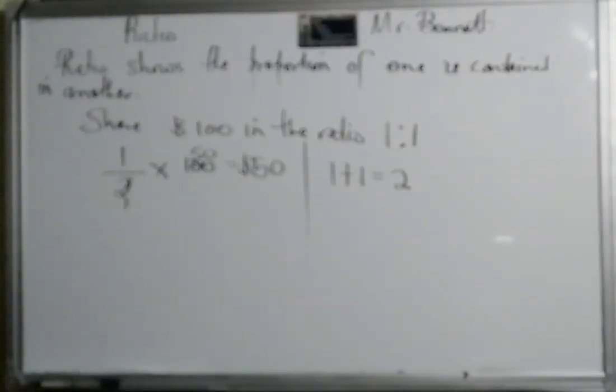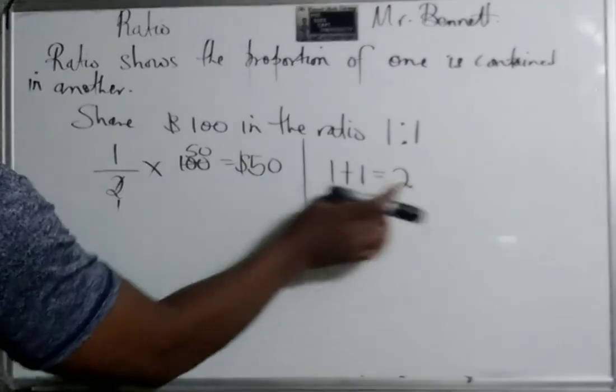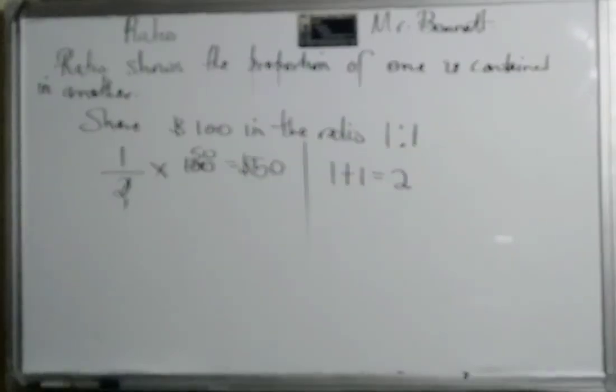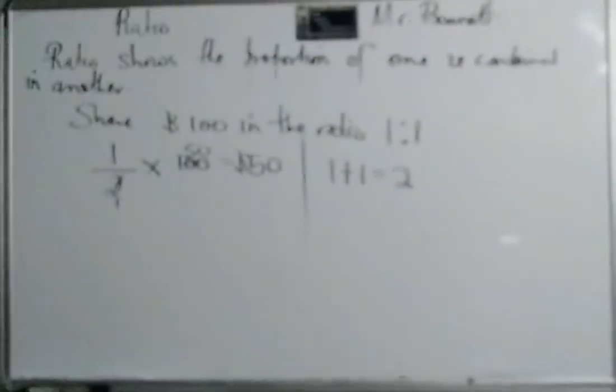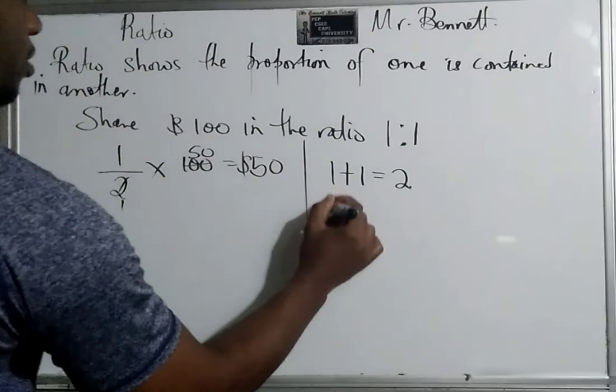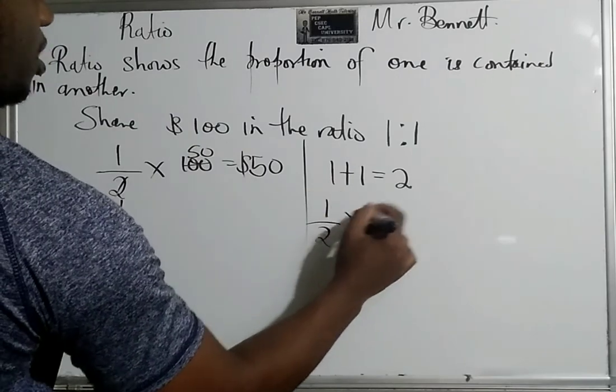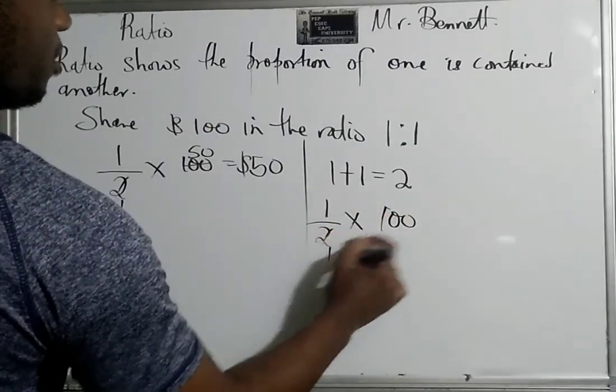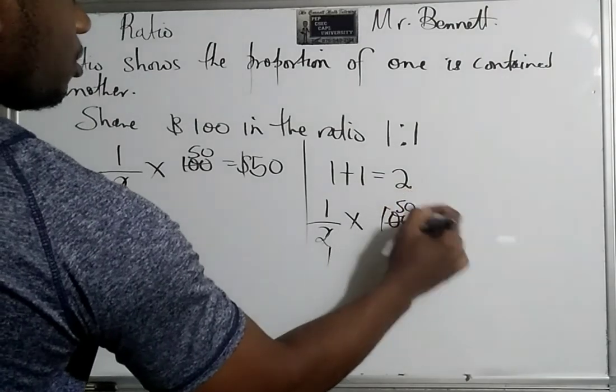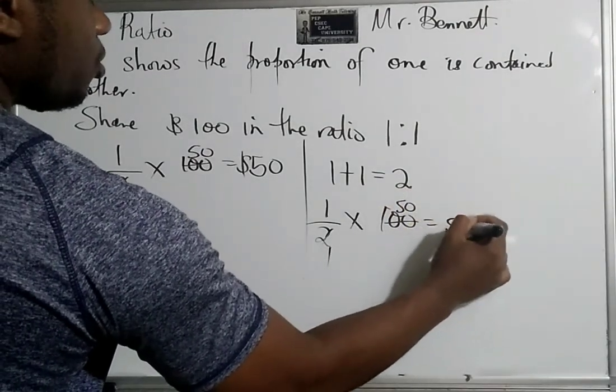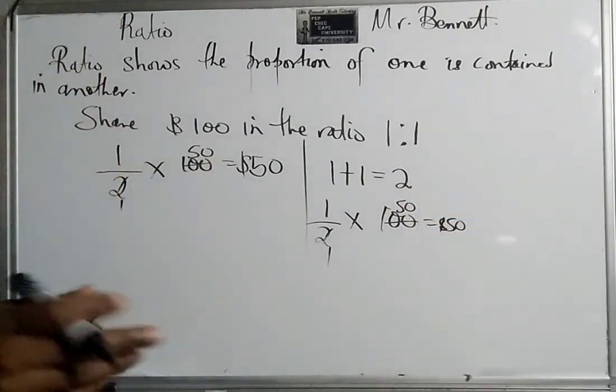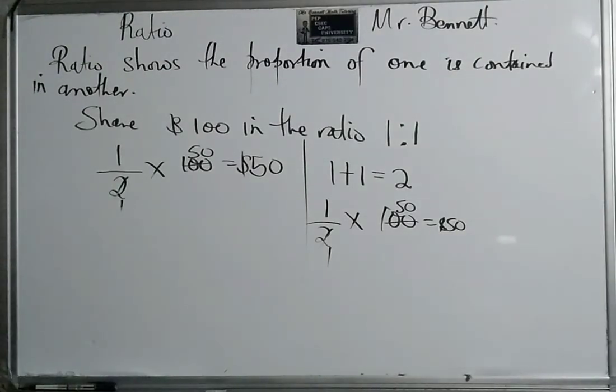So the entire hundred dollars is represented by two, but only one is yours. So you said one out of the two, one-half of a hundred dollars is yours, and you multiply by a hundred so it's the same thing, and you would have gotten 50 dollars for yourself.